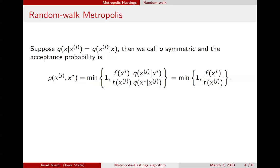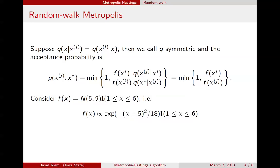This means that if the proposed value has a higher density under the target distribution than the current value, we will always accept it. If it doesn't, we accept it with some probability. As an example, we consider a truncated normal: the untruncated normal has mean 5 and variance 9, truncated to be between 1 and 6. We've shown before how to draw samples using the inverse CDF method, but now we'll use the random walk Metropolis method.